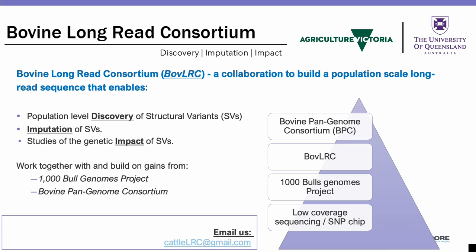Very recently, together with the University of Queensland in Australia, we kickstarted the Bovine Long-Reads Consortium to build a population-scale long-read sequence dataset that enables the discovery and imputation of structural variants. Together, the Bovine Long-Reads Consortium, the 1000 Bull Genome Project, and the Bovine Pan-Genome Consortium are working to improve our understanding of the genomic basis of traits and conditions in cattle.